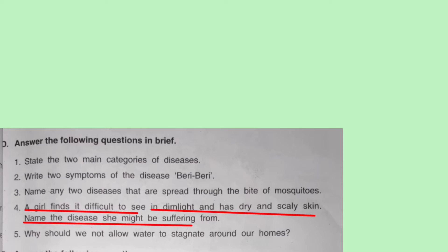Question four: a girl finds it difficult to see in dim light and has dry and scaly skin. These symptoms — difficulty seeing in dim light and dry, scaly skin — indicate which disease? The disease is night blindness.